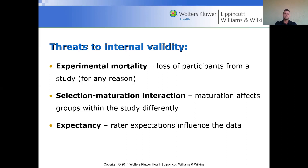Expectancy means researcher or participant expectations influence the data. This is why double-blind experiments are really important — if the experimenter knows who is on supplement A versus supplement B and really wants supplement A to work, they may enthusiastically encourage the supplement A group during exercise while being less motivating with the other group. That can have a big influence on how those groups perform.